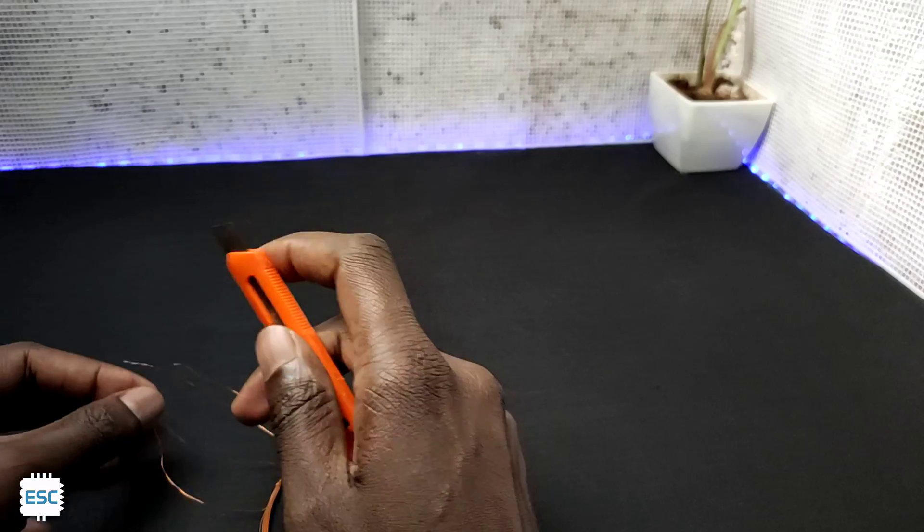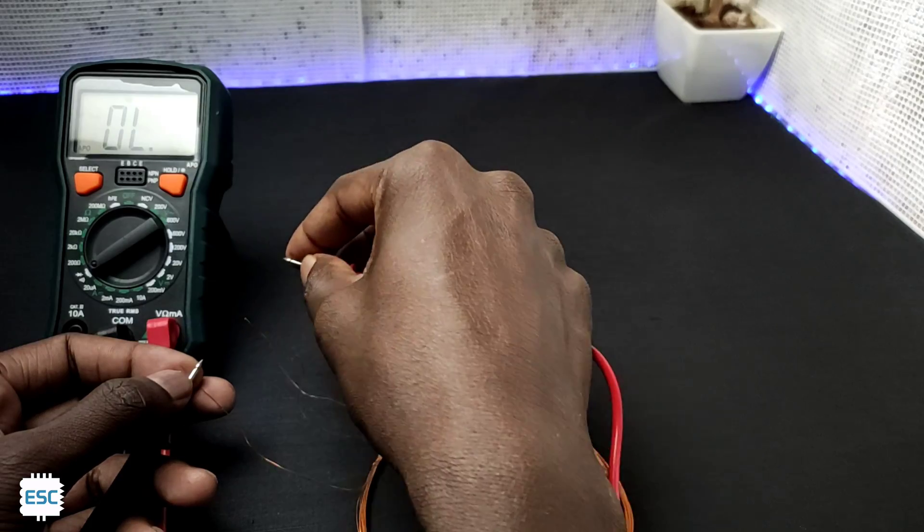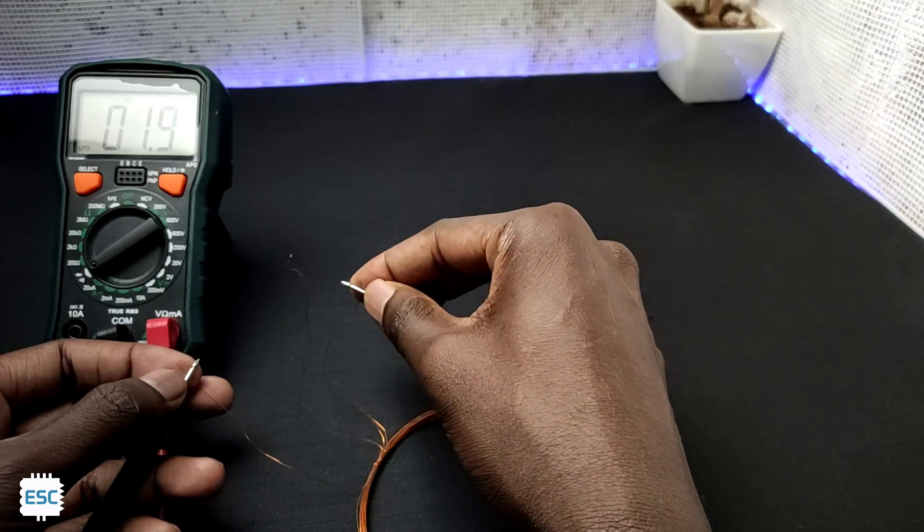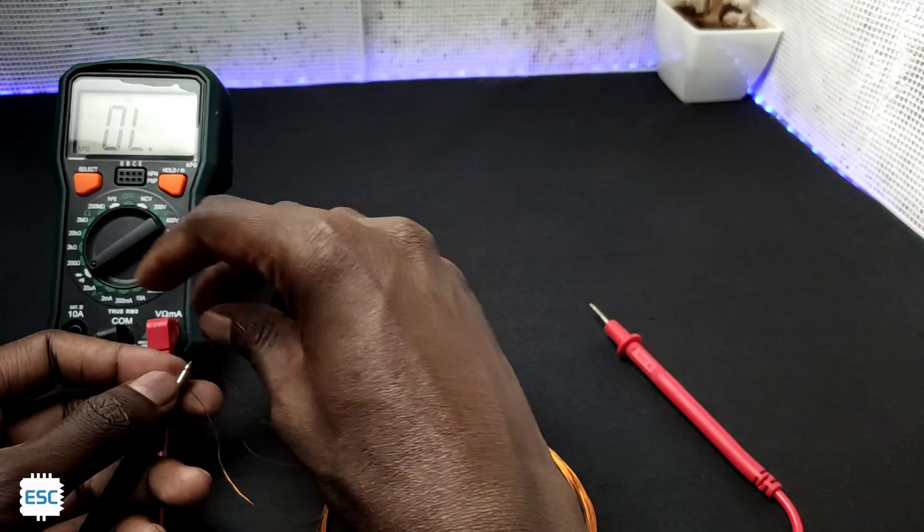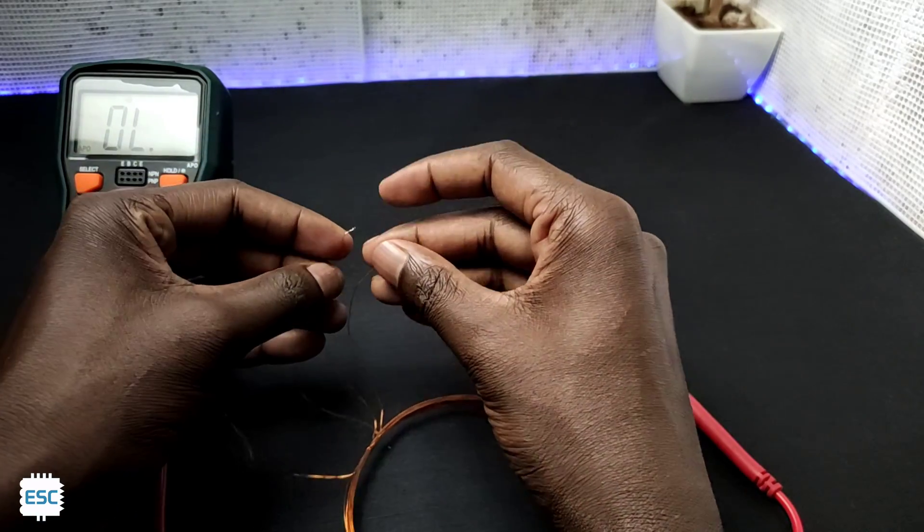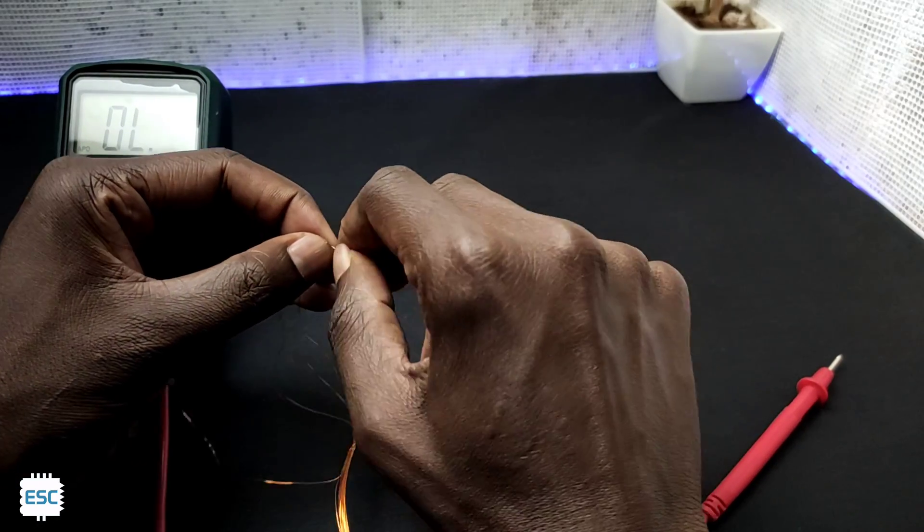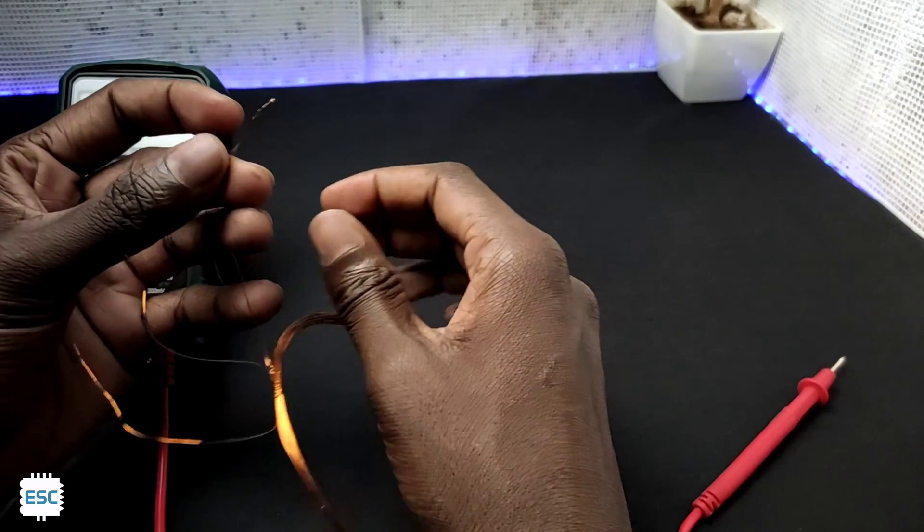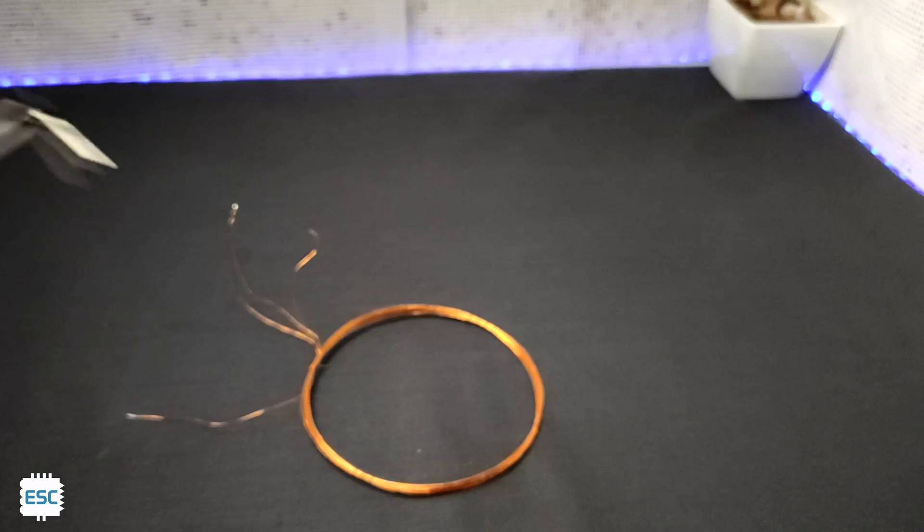Then I removed the insulation of the ends of the coil. Now find the two coils using a multimeter and connect one end of each coil together. So now we have three connections. If you are confused with the connections you can refer the circuit diagram. Link is in the description. Now let's build the oscillating circuit.